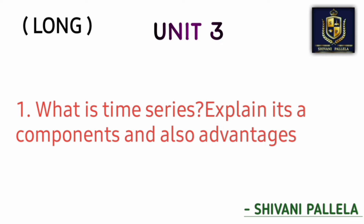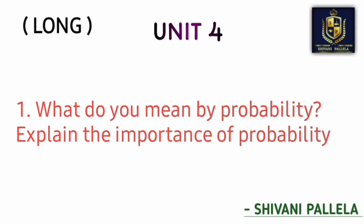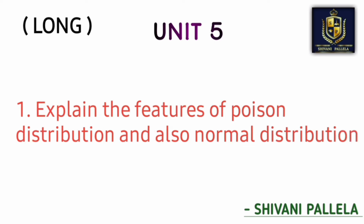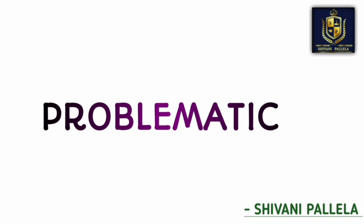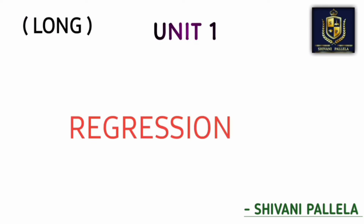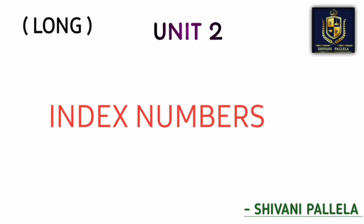From unit three, moving averages, you will not get any theory at all, so don't prepare that. For time series, just prepare regression problematic method. For index numbers: Marshall-Paasche, Fisher, Edgeworth, Bowley, and Laspeyres — these five formulas you need to remember. Also moving averages for three, four, five, and seven years, Poisson distribution, and Bayes' theorem.